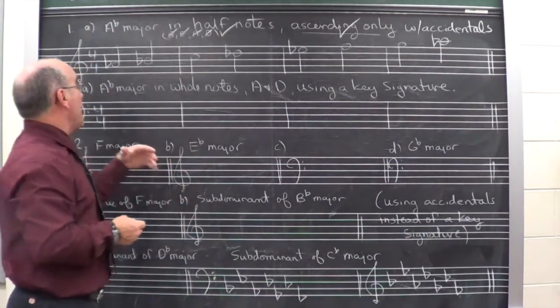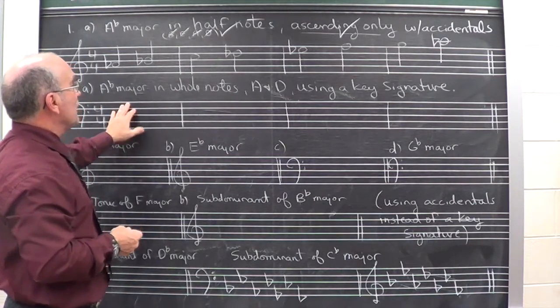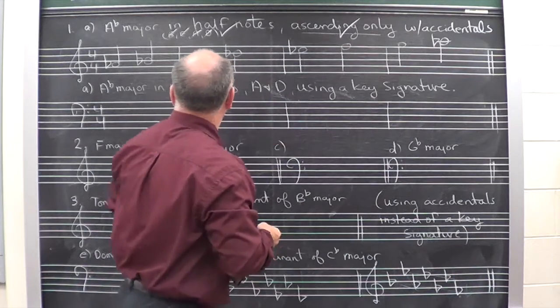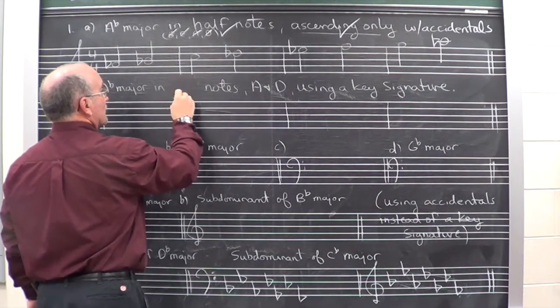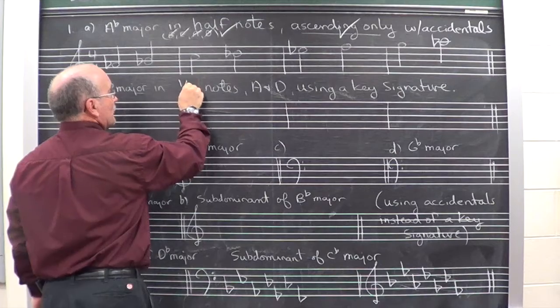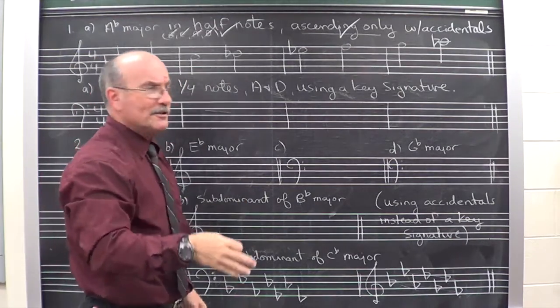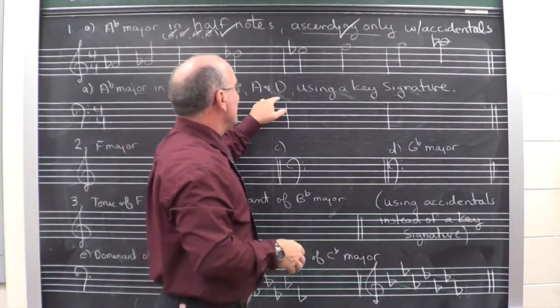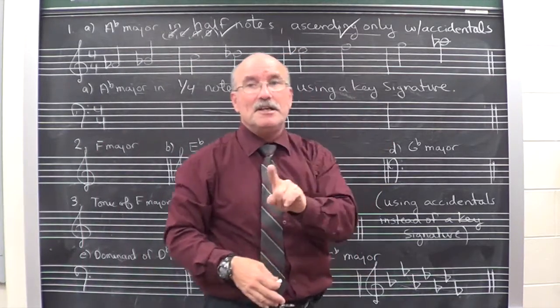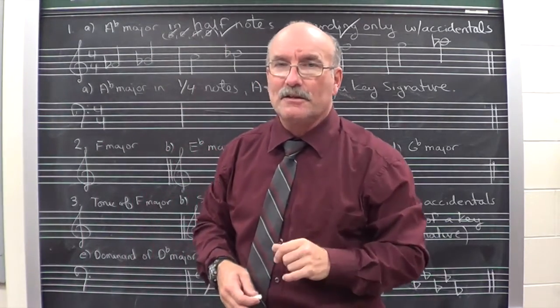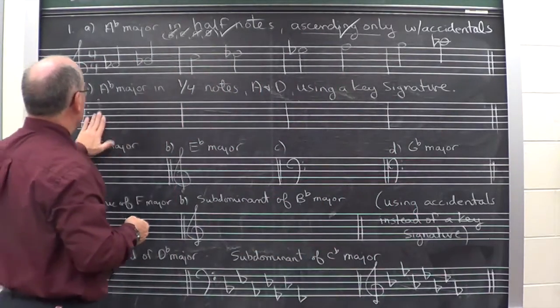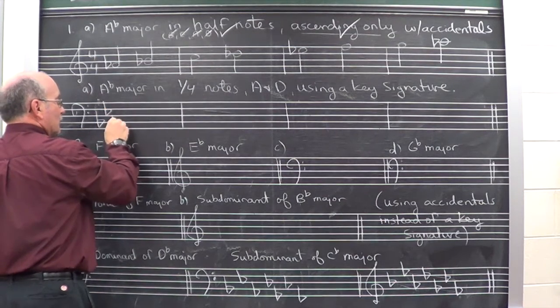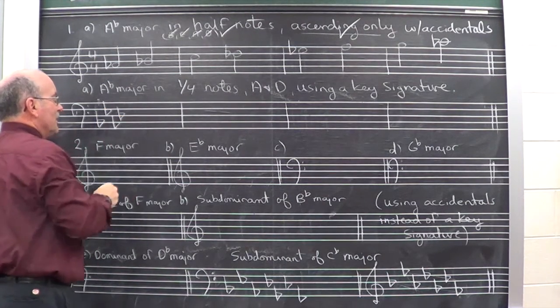Another type of question you could be asked is to write the A flat major scale in whole notes ascending and descending. You know what? Let's change that because otherwise I'm going to be in big trouble. Let's make that quarter notes. Hey, I'm the teacher. I can change it. So, I'm going to write A flat major in quarter notes ascending and descending using a key signature instead of accidentals. So, now at the very beginning, I'm going to write the key signature which is B, E, A, and D flat.